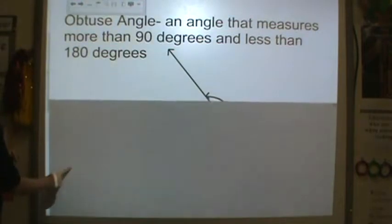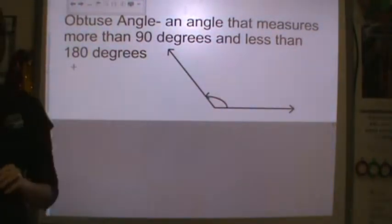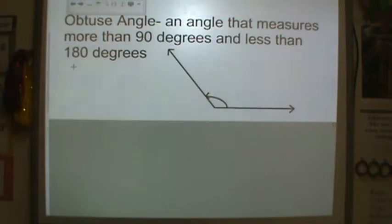You have an obtuse angle. It is an angle that measures more than 90 degrees and less than 180 degrees.